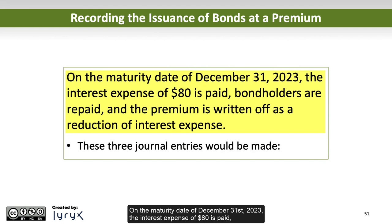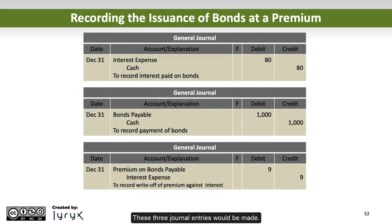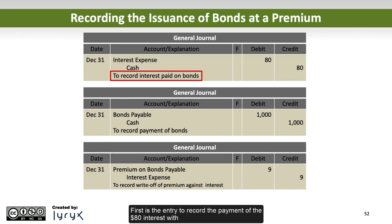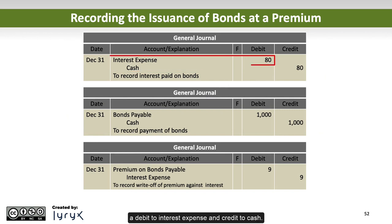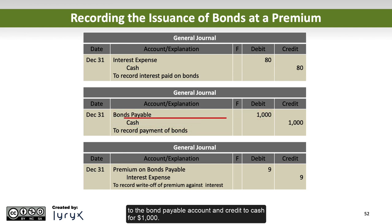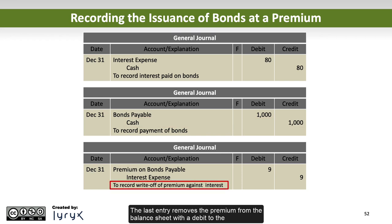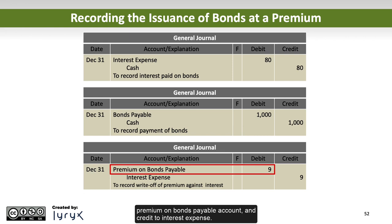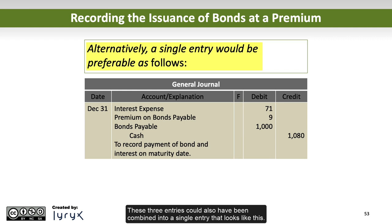On the maturity date of December 31, 2023, the interest expense of $80 is paid, the bondholders are repaid, and the premium is written off as a reduction of interest expense. Three journal entries would be made: first, debit interest expense and credit cash for $80; second, debit bond payable and credit cash for $1,000 to de-recognize the bond; and third, debit the premium on bonds payable and credit interest expense to remove the premium from the balance sheet.